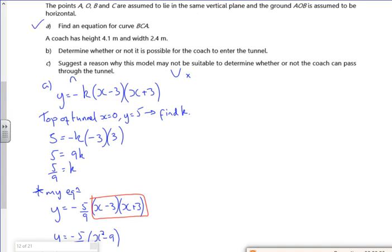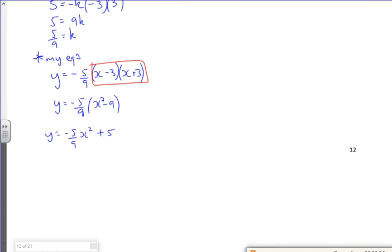So a coach has a height of 4.1 and a width of 2.4. Will it go through? Now if I assume that it's going through the centre of the tunnel, this is part B, so if it goes through the centre of the tunnel,